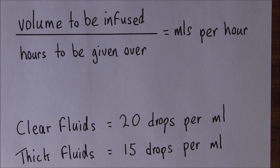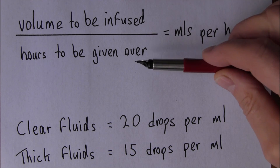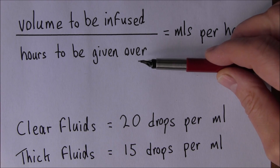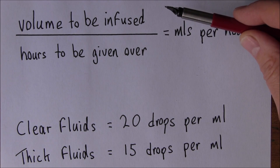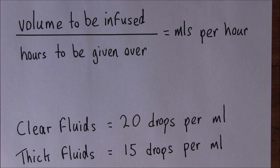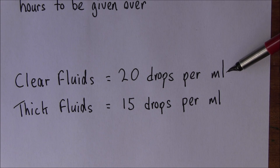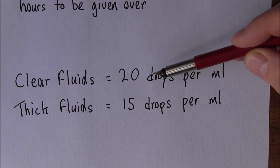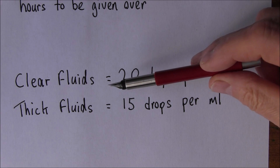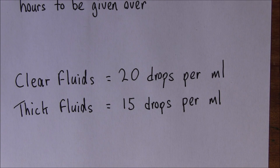How do we know how quickly we are giving our intravenous drips? The equation is volume to be infused divided by hours to be given over, and that gives us mils per hour. The other thing to know is that clear fluids on most giving sets will give 20 drops per milliliter, while thicker fluids like blood, plasma, or protein-based preparations will be 15 drops per mil.